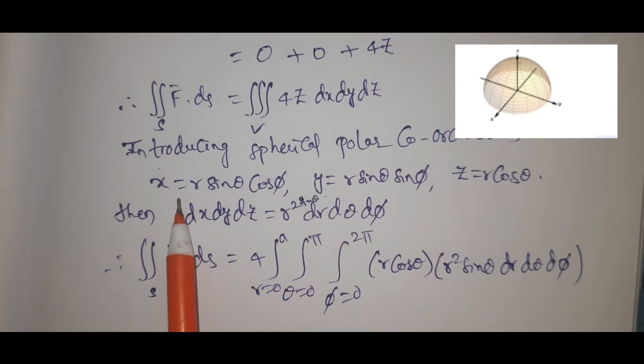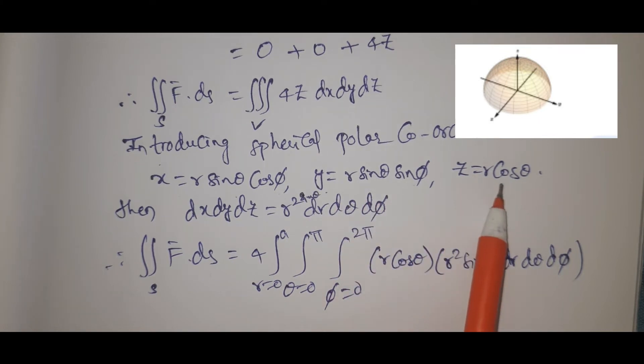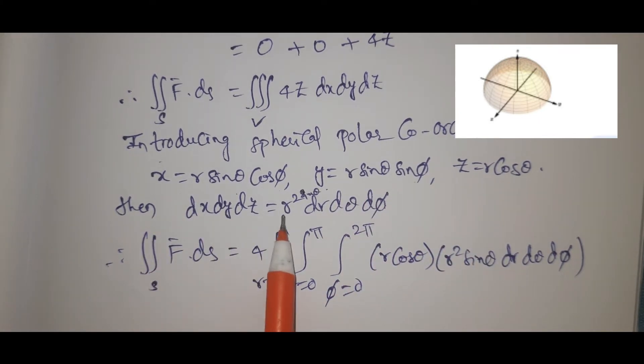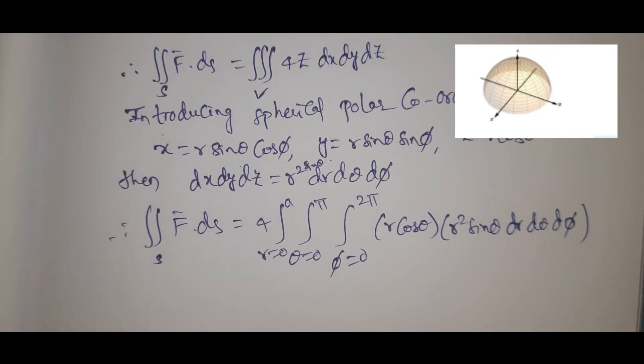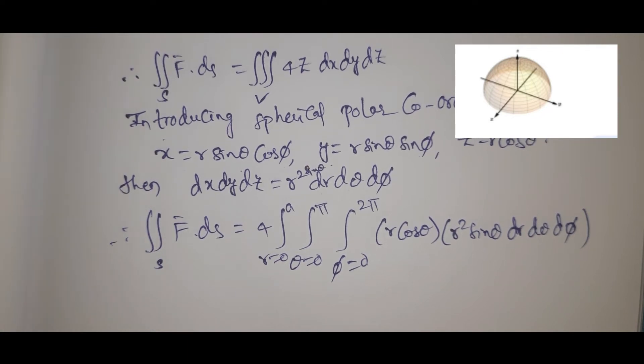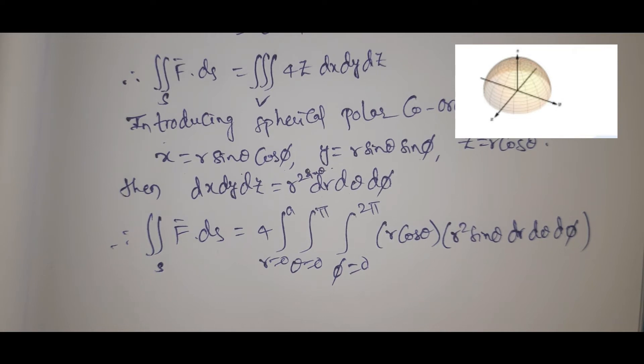Introducing spherical polar coordinates: x = r sin theta cos phi, y = r sin theta sin phi, z = r cos theta, then dx dy dz = r² sin theta dr dtheta dphi. This is the Jacobian for the coordinate transformation.